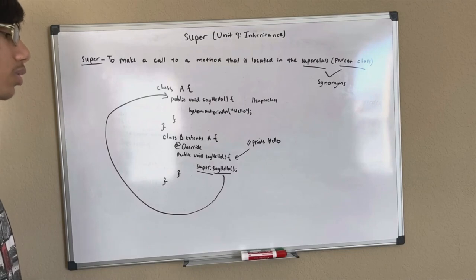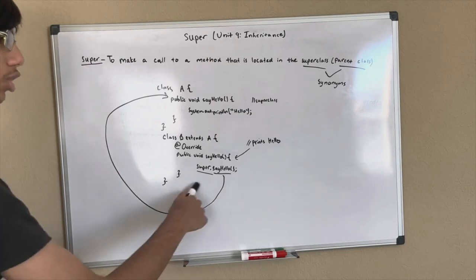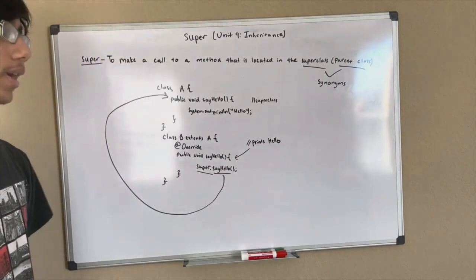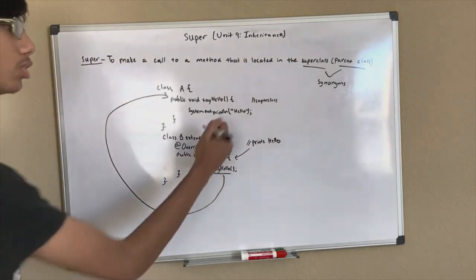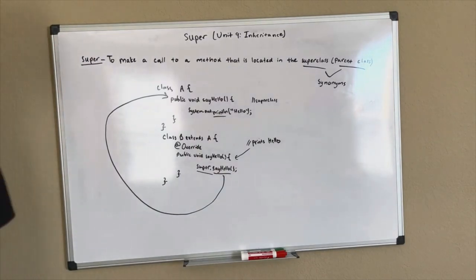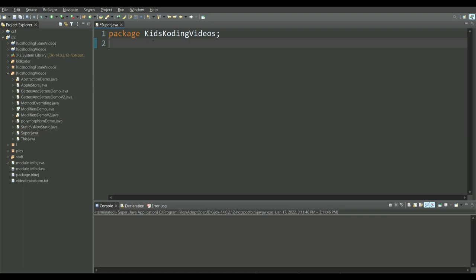If we wanted to, we can make a super call twice — super.sayHello and then super.sayHello again — and that's going to print Hello twice, on two separate lines. So that's really how the super keyword works in Java. Now, I haven't talked about method overriding yet — that's going to come shortly after polymorphism. Method overriding is just a type of polymorphism, so it makes more sense to cover polymorphism before method overriding.